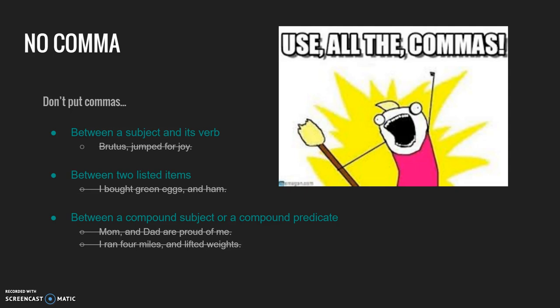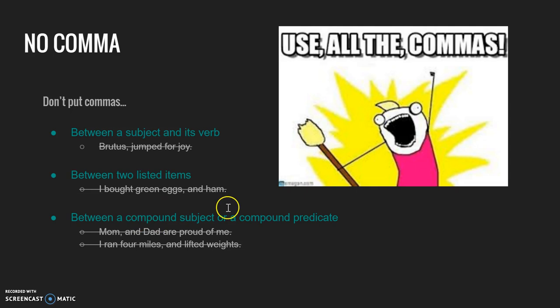There are a few times when you should not use commas where people often mess up. Don't put a comma between a subject and its verb — there's no reason to pause in 'Brutus jumped for joy.' Don't put a comma between two listed items — 'Green eggs and ham' doesn't need a comma. And don't put commas between compound subjects, compound predicates, compound objects, or any kind of two-part list.